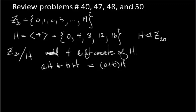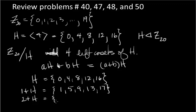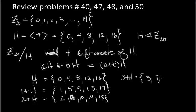The 4 left cosets are: H = {0, 4, 8, 12, 16}; then 1 + H = {1, 5, 9, 13, 17}; then 2 + H = {2, 6, 10, 14, 18}; and 3 + H = {3, 7, 11, 15, 19}. Look at the partition — those 4 cosets partition Z20 into pairwise disjoint sets. H is normal, so these cosets themselves will form a group.